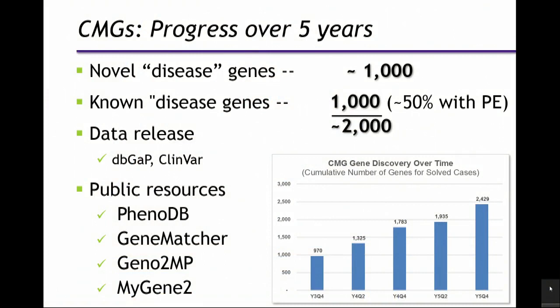What have the CMGs done over five years? In aggregate, we've identified about 1,000 novel disease genes — high-quality candidates, some absolutely confirmed. We've also identified about 1,000 known disease genes: we looked at a patient with a phenotype we didn't recognize, accepted it as unknown, did the analysis, and found mutations in a known disease gene — very often allowing us to expand the phenotypic spectrum of a disorder, which we call phenotypic expansion. We've released a lot of data to dbGaP and ClinVar in the spirit of precision medicine and developed a lot of public resources.